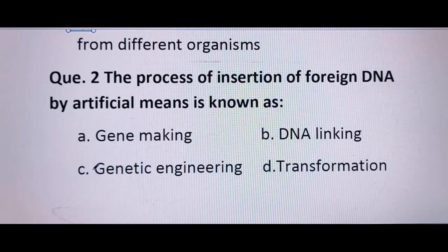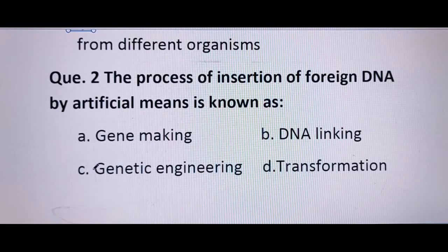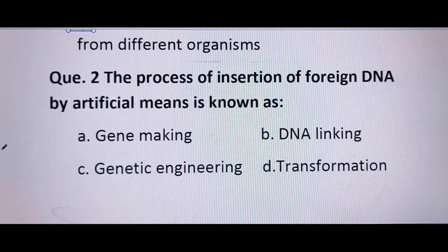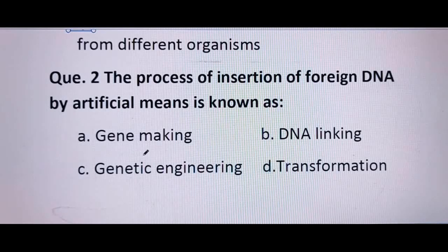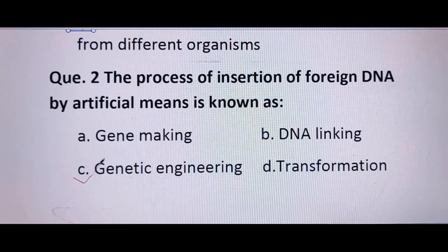Second question: the process of insertion of foreign DNA by artificial means is known as — if a gene is present naturally, there is no need for artificial insertion. This artificial insertion of genes is done by genetic engineering, so C is the correct option.